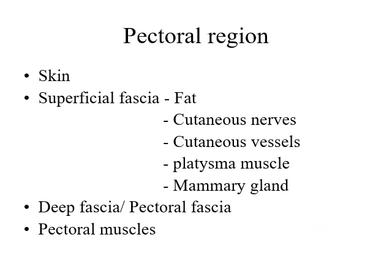The pectoral region lies on the front of the chest and is covered by skin. Deep to the skin, there is superficial fascia. The superficial fascia contains fat, cutaneous nerves, cutaneous vessels, platysma muscle, and the mammary gland. So the mammary gland is a content of the superficial fascia of the pectoral region.